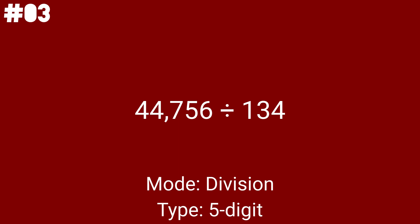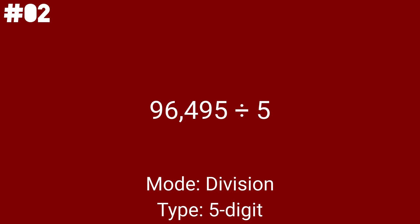We still have 2 more math problems after this, so we're almost there. 96495 divided by 5 is the second to last division problem. This one is when you divide by 5 yet again, but it's not the most common divisor — that honor goes to 3. Let's go to the last problem.